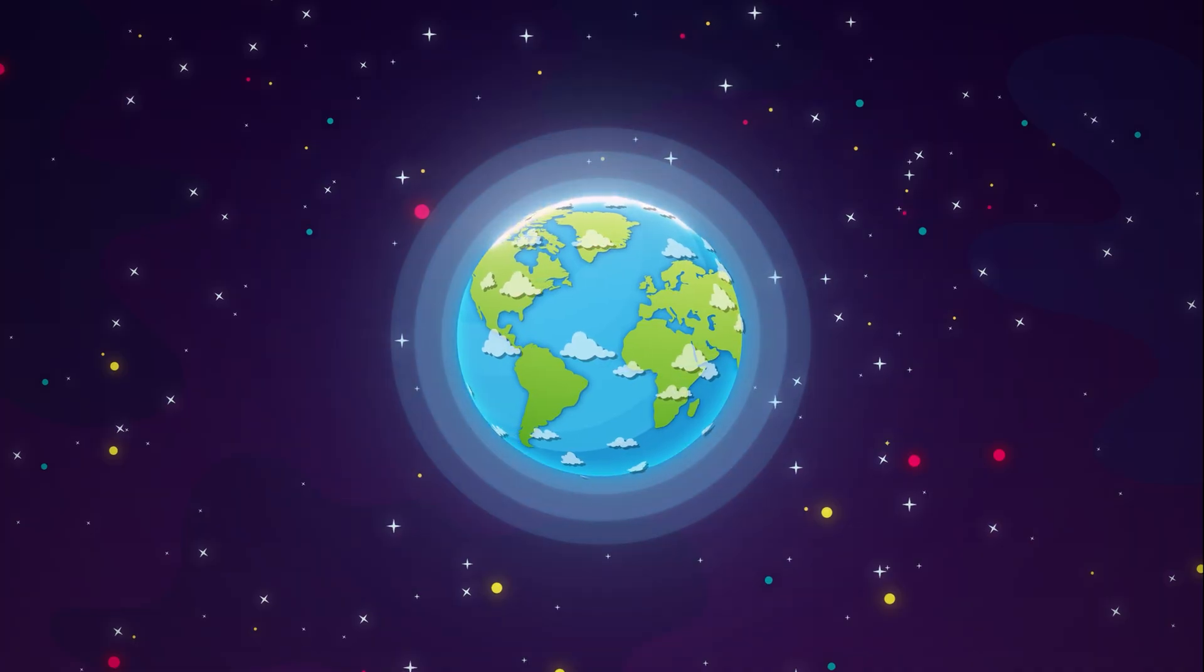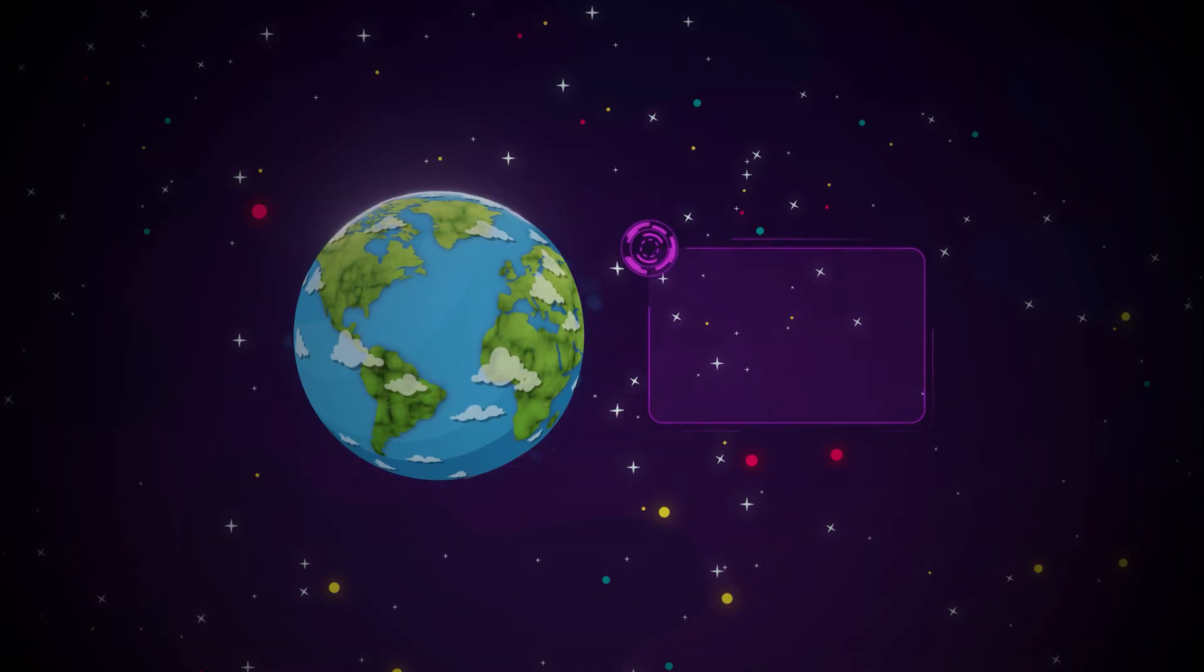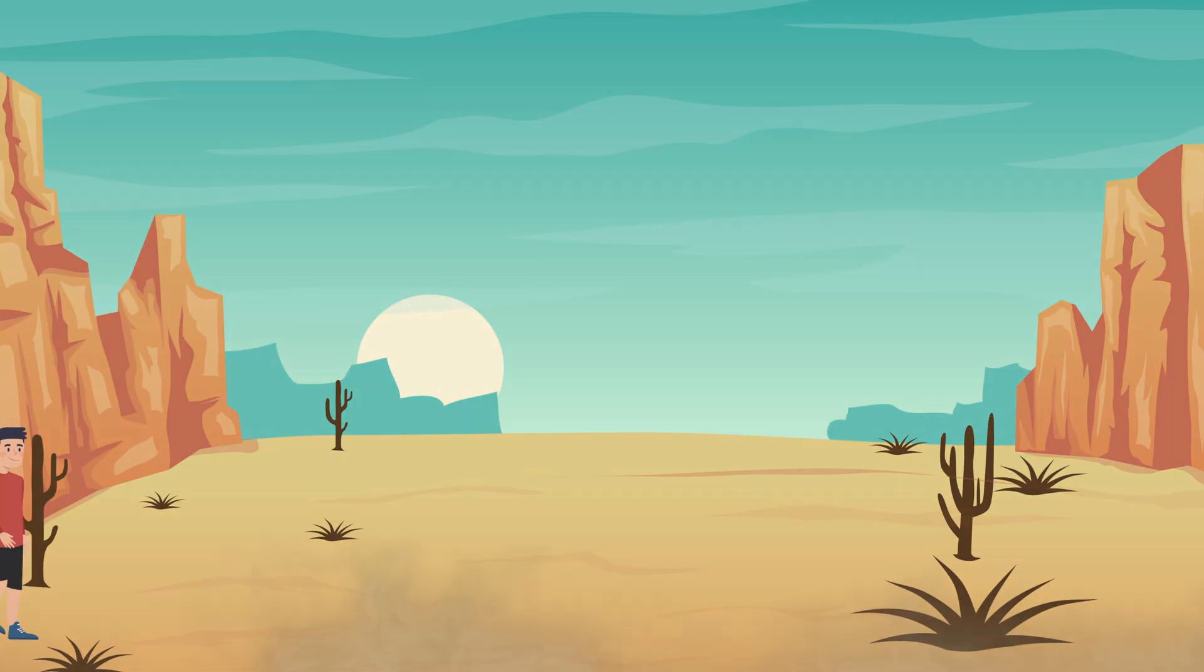In space, a soft blue halo around Earth disappears in a flash. The line between sky and void vanishes. The planet doesn't explode. It exhales, and everything begins to die.